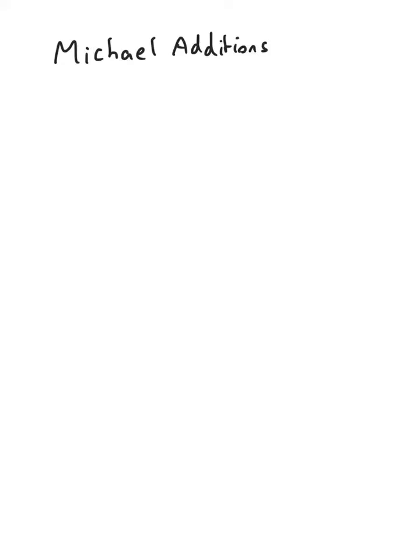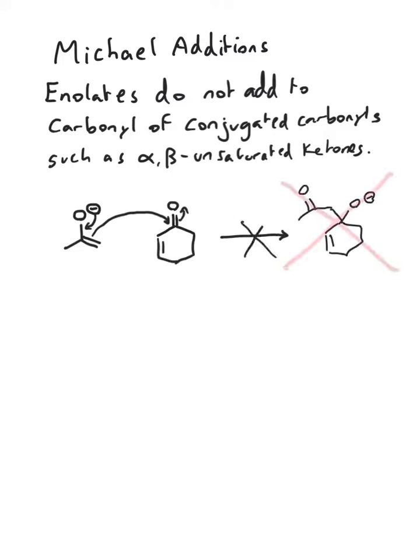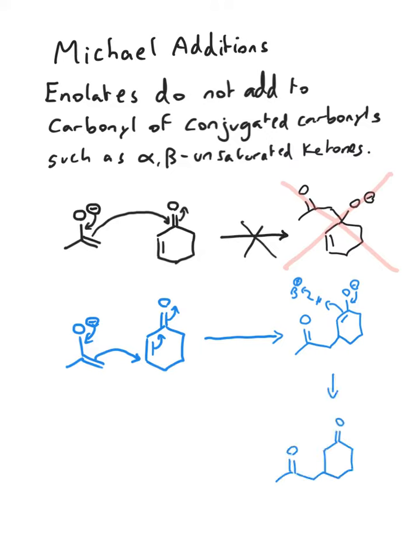This video is about Michael additions. Enolates will not attack the carbon of the carbonyl of a conjugated carbonyl. Instead, enolates are soft nucleophiles, so they add to the double bond instead. When a stabilized carbanion attacks the double bond of a conjugated carbonyl, it is referred to as a Michael addition.